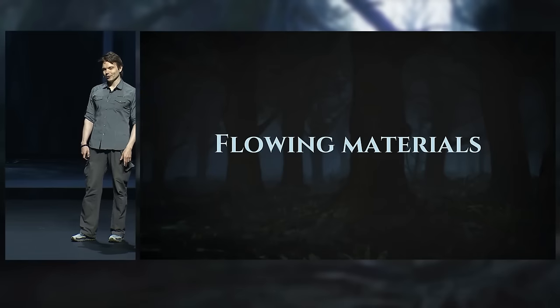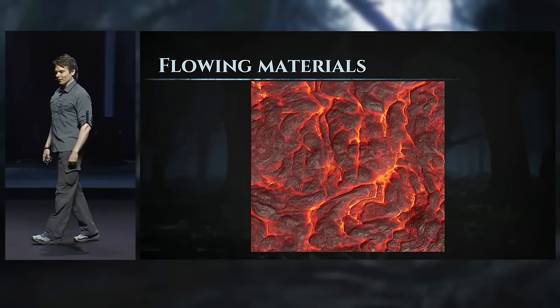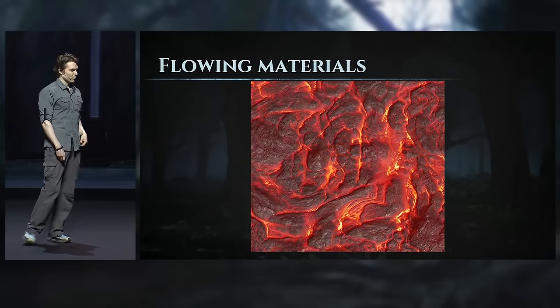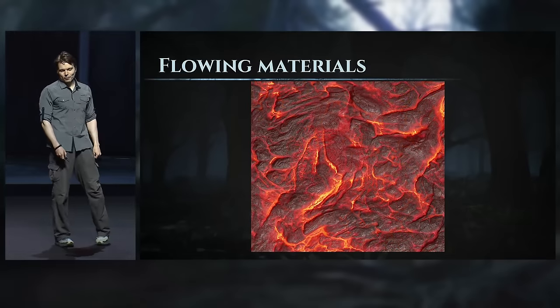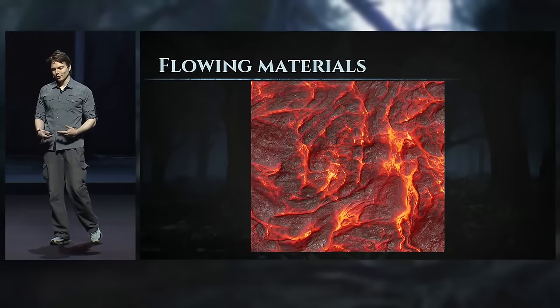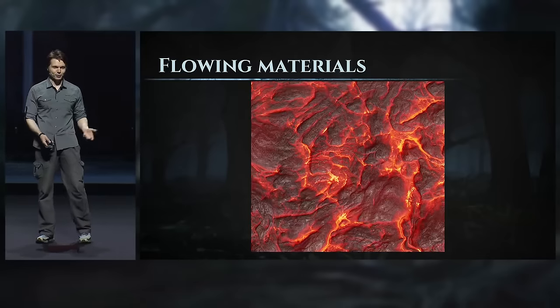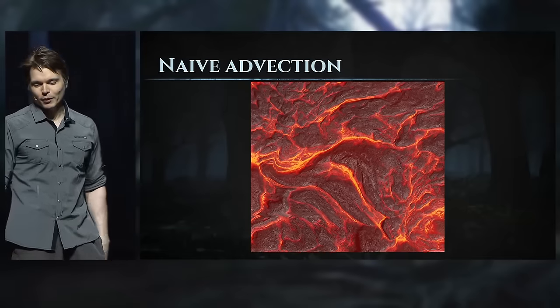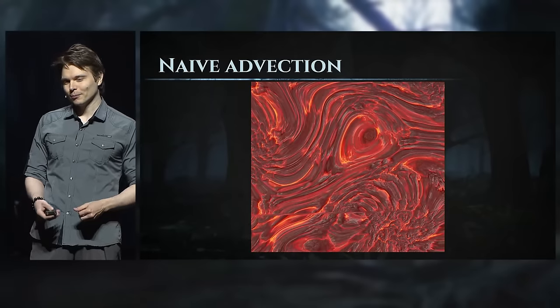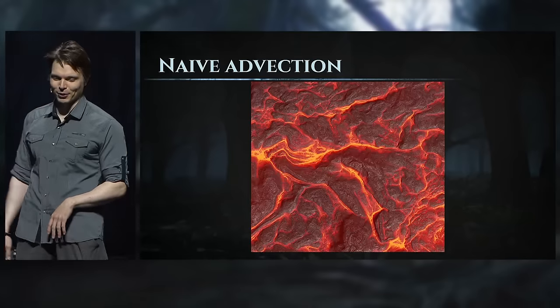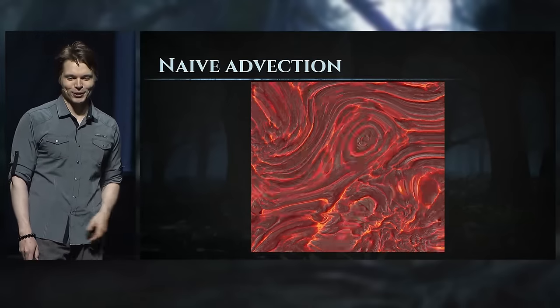The first technique I want to talk about is flowing materials. It's a very basic technique used everywhere in our game. This effect is driven by a velocity map — the goal is to have a texture that flows according to some flow calculated or provided as a texture. The naive approach is to apply a displacement to a texture and keep increasing that displacement over time, but this creates a nasty warped texture. You just cannot keep distorting a texture indefinitely.